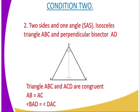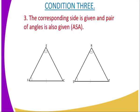Then we can go to case or condition number three. In condition number three, we have the corresponding side is given and a pair of angles is also given. And therefore, you can see that there are two angles here which are given, and they are supposed to be equal to one another. And the corresponding side is also given, meaning that only one side is equal to one another. For example, in this case...